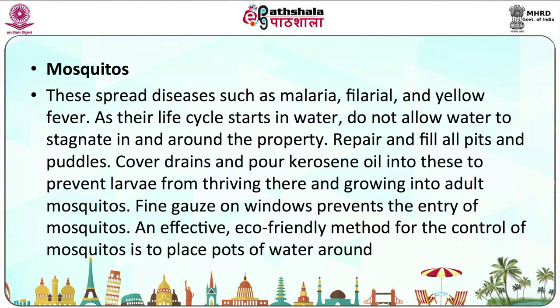Mosquitoes spread diseases such as malaria and yellow fever. As their life cycle starts in water, do not allow water to stagnate in and around the property. Repair and fill all pits and puddles. Cover drains and pour kerosene oil into these to prevent larvae from thriving there and growing into adult mosquitoes. Fine mesh on windows prevents the entry of mosquitoes. An effective eco-friendly method for the control of mosquitoes is to place pots of water around — to act as traps.